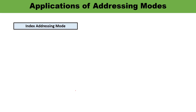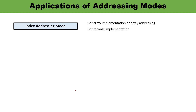Next is index addressing mode. In this addressing mode, the content of an index register — a special CPU register — is added to the address part of the instruction to obtain the effective address. Its applications include array implementation and records implementation.